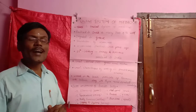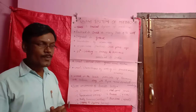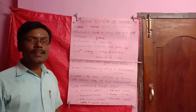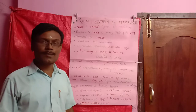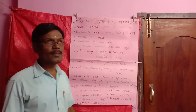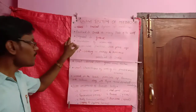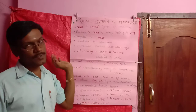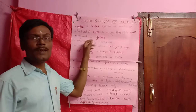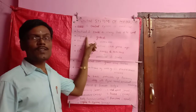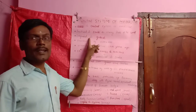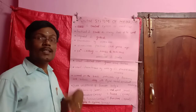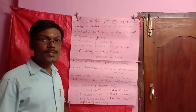The Unani System of Medicine is the Indian traditional system of medicine. It was the oldest as well as trusted Indian system of medicine. It was first originated in Greece.